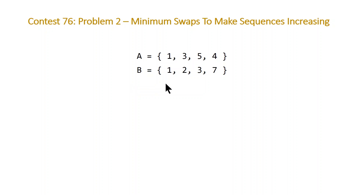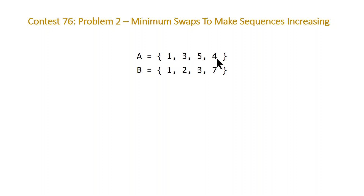Strictly increasing is similar to sorted, the only difference being that adjacent elements can't have the same value. So if we switched five and three, this would result in a being [1,3,3,4], which is technically sorted but not strictly increasing, so that's not a possible solution. The solution here is swapping the last element in both sequences — swapping four and seven — giving us [1,3,5,7] for a and [1,2,3,4] for b, which are both strictly increasing.